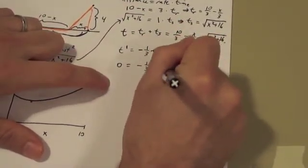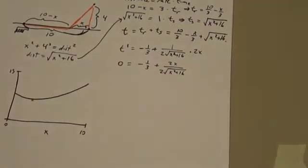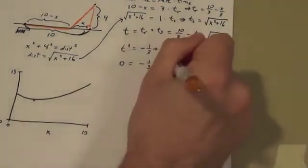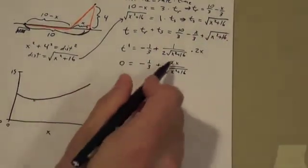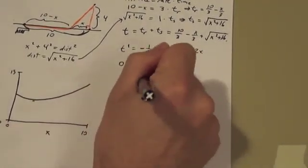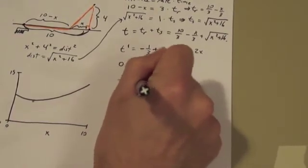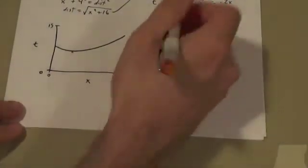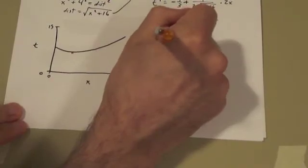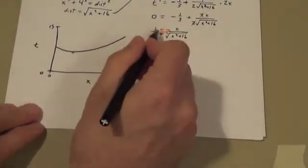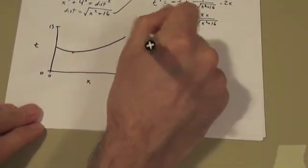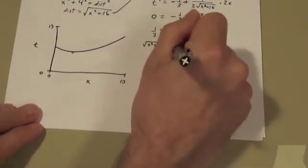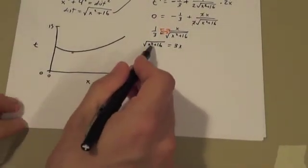I'm just going to put the 2x on the top and solve this equation. Now the first thing you notice when solving this is that the twos will cancel. So we cancel the twos and move the minus one third over. We get one third equals x divided by square root x squared plus 16. Now there are many steps you could take to get to the answer here, but I'm just going to do it by viewing this as a proportion and cross multiplying. So 1 times square root x squared plus 16 is square root x squared plus 16. 3 times x is 3x.